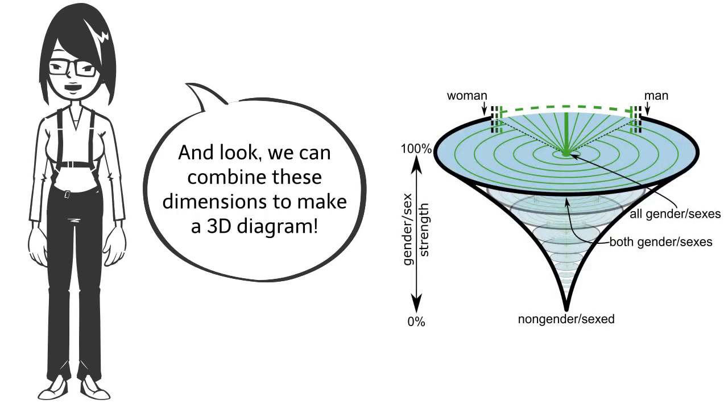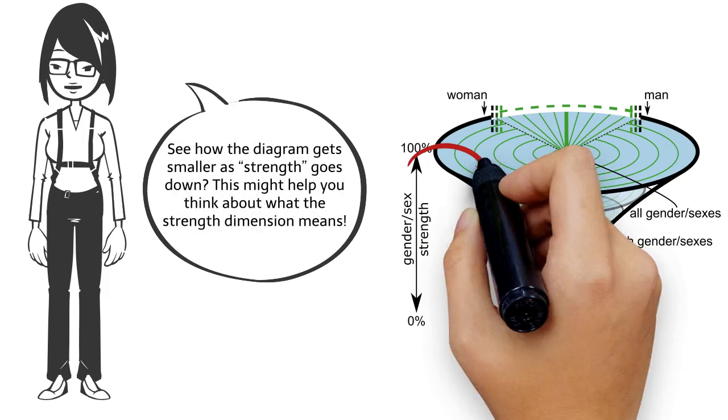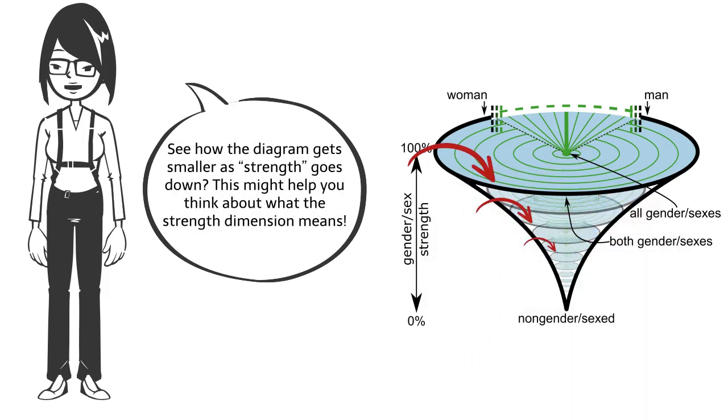And look, we can combine these dimensions to make a 3D diagram. See how the diagram gets smaller as strength goes down? This might help you think about what the strength dimension means.